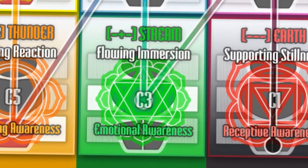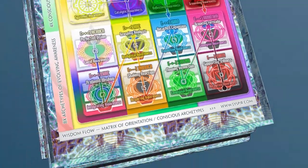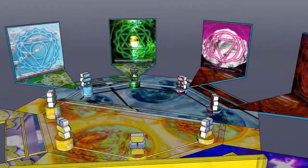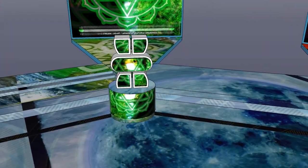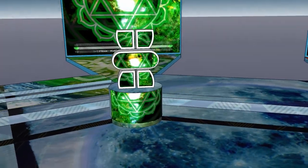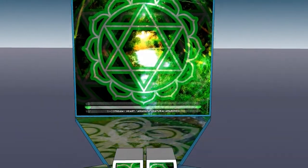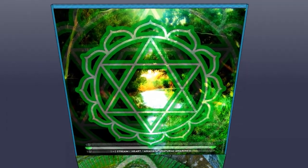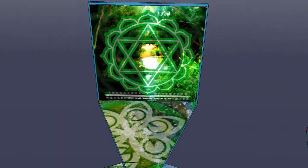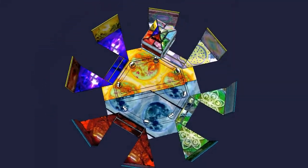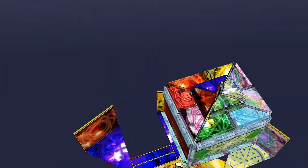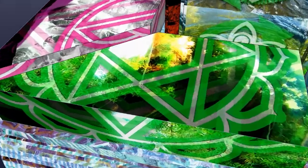Stream: Flowing Immersion, Emotional Awareness. Minus, Plus, Minus. Body Static, Heart Dynamic, Intellect Static. Heart Chakra: Experience, Expression, Enjoyment and Connection. Awareness is established in the flowing experience of the stream.